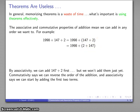Well, I get to apply associativity again. I don't have to add these two. I can add these two. Why would I ever want to do that? Part of the reason I might want to do that is that's a much easier addition. 1,998 plus 2 is 2,000 plus 147.